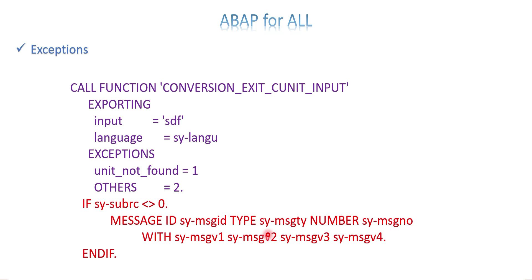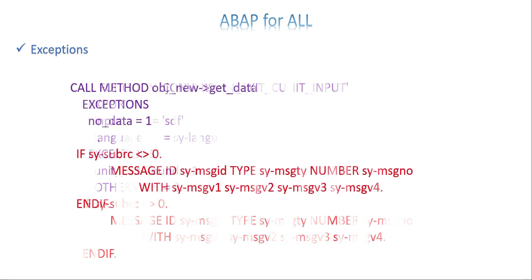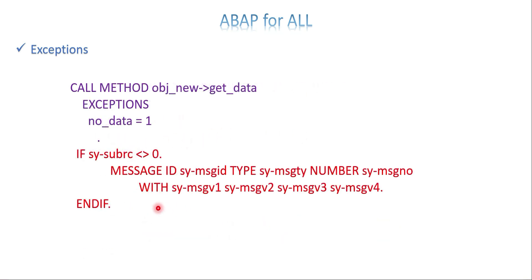Sometimes you may choose to ignore exceptions if the program needs to continue running — maybe send an email later and figure out what happened. For the unit of measure conversion example, if this exception happens very rarely, you use SY-SUBRC not equal to 0 and do the process so it will continue. And this is another way — if you have a class with a method that has an exception raised inside it, that also needs to be captured whenever you call that method.